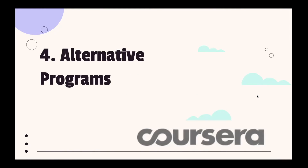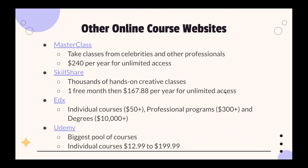Here are some alternative programs to Coursera if you don't like the price point or want to try something new: MasterClass lets you take classes from celebrities and professionals at $240 per year for unlimited access. Skillshare offers thousands of hands-on creative classes with one free month, then $168 per year. edX offers individual courses for $50 and up, professional programs for $300 and up, and degrees for $10,000 and up. Udemy has the biggest pool of courses with individual courses ranging from $13 to $200.